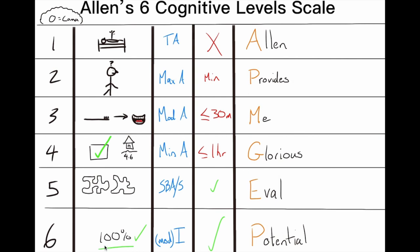The assistance levels column is pretty straightforward: total assistance, max assistance, moderate assistance, minimal assistance, standby assist or supervision, and independent — corresponding to levels one through six respectively.